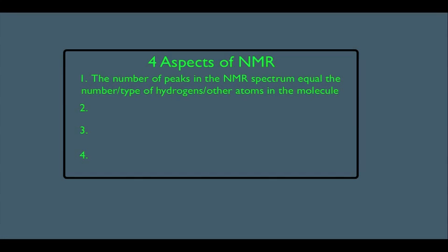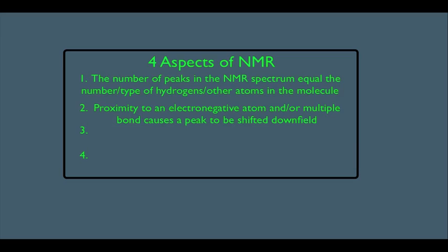In this online lecture we're going to discuss the second aspect of NMR, and that is proximity to an electronegative atom and or a multiple bond causes a peak to be shifted downfield. We want to understand why this is so and use it to predict where peaks might be on an NMR spectrum.